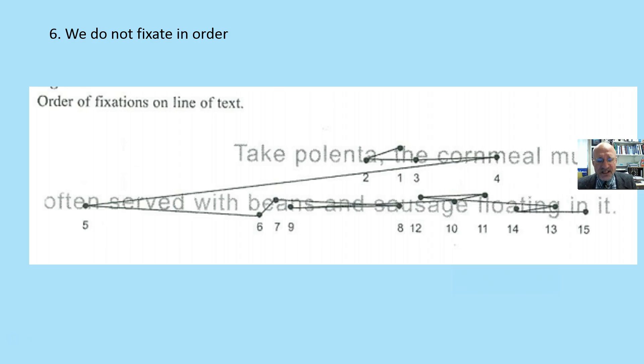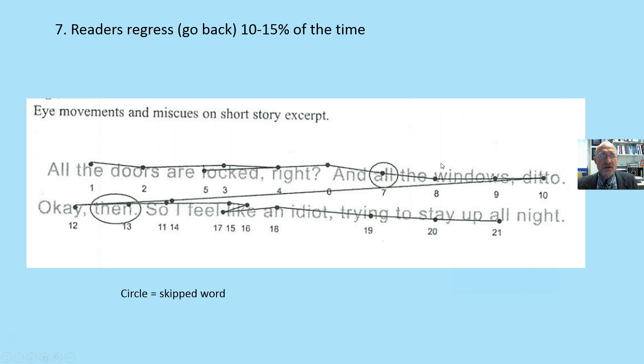We do not fixate in a logical order. The numbers here illustrate the order in which the eyeballs stopped. And if we read this in order, 'the polenta, the cornmeal' often does not make sense. Our eyeballs go back sometimes to regress. That's an example of regression, to check it out, to help our brain create meaning with print.